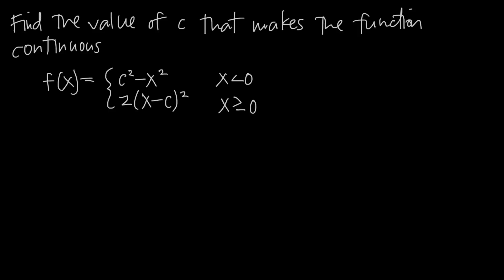In this video, we're talking about continuity, and more specifically, we're talking about how to find the value of some constant in your piecewise-defined function that makes the function continuous. We've been given this function f of x with two expressions: c squared minus x squared, and 2 times the quantity x minus c squared. This is a piecewise-defined function because there are two pieces defining the function in different intervals, and we want to find the value of c that makes the function continuous.